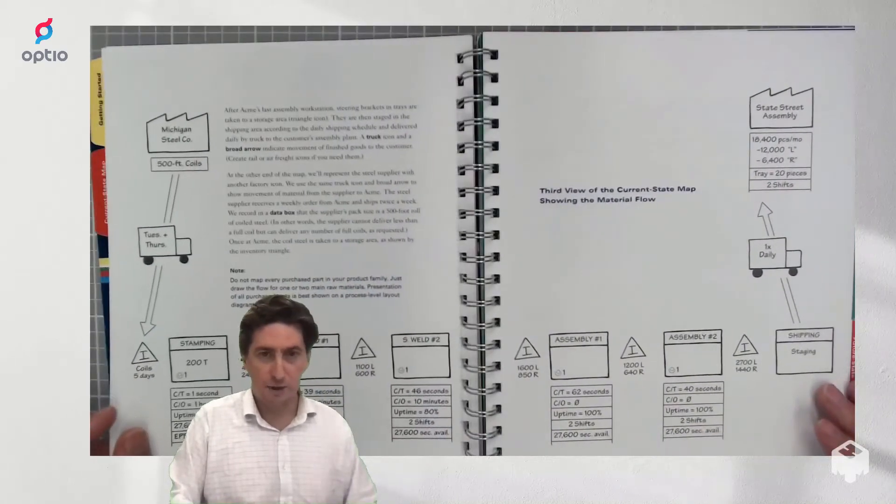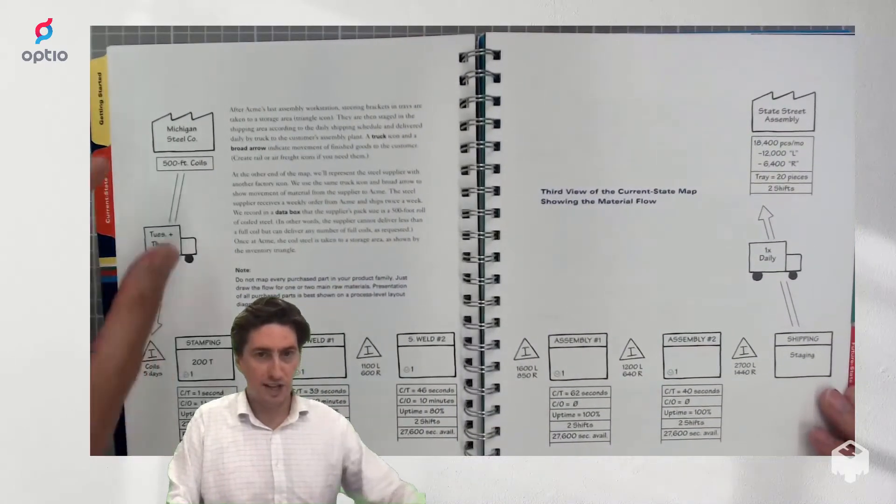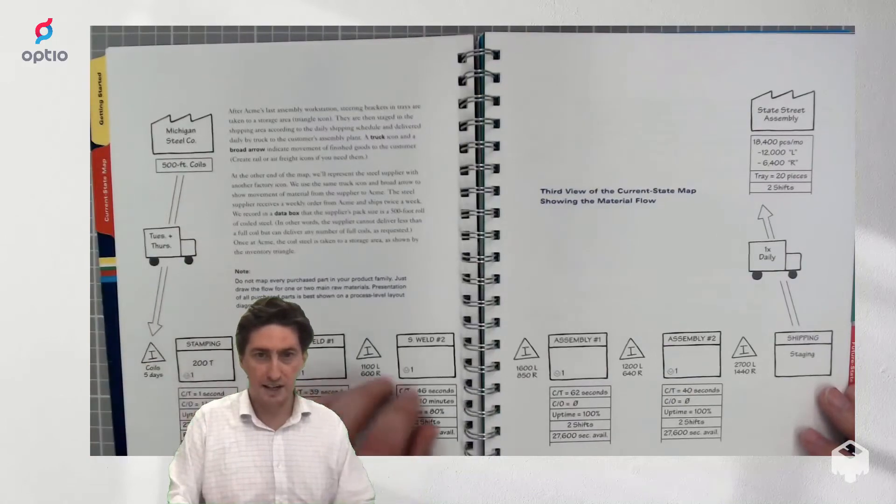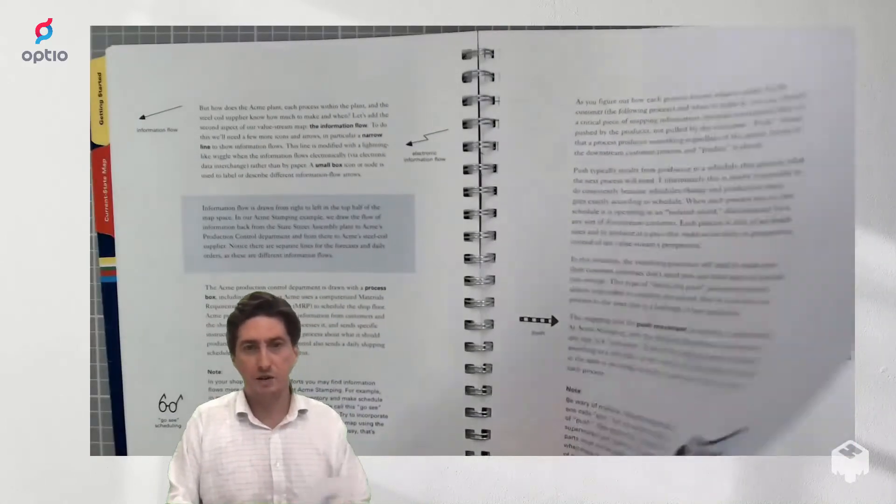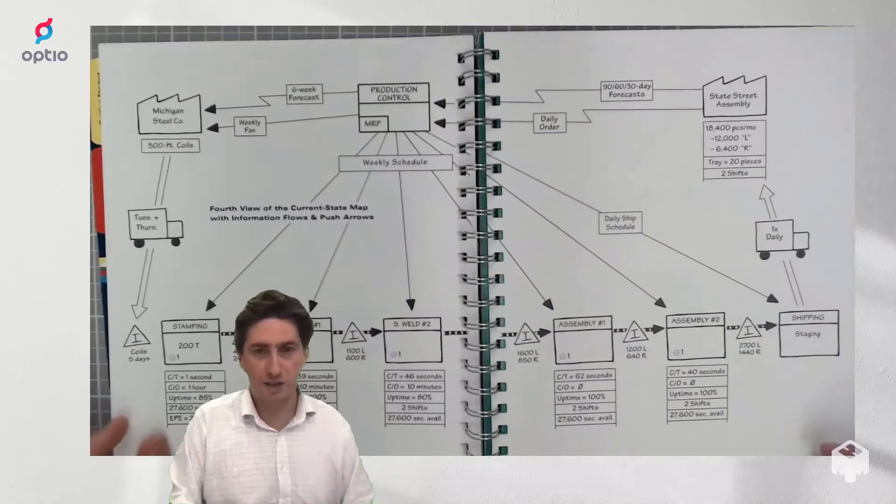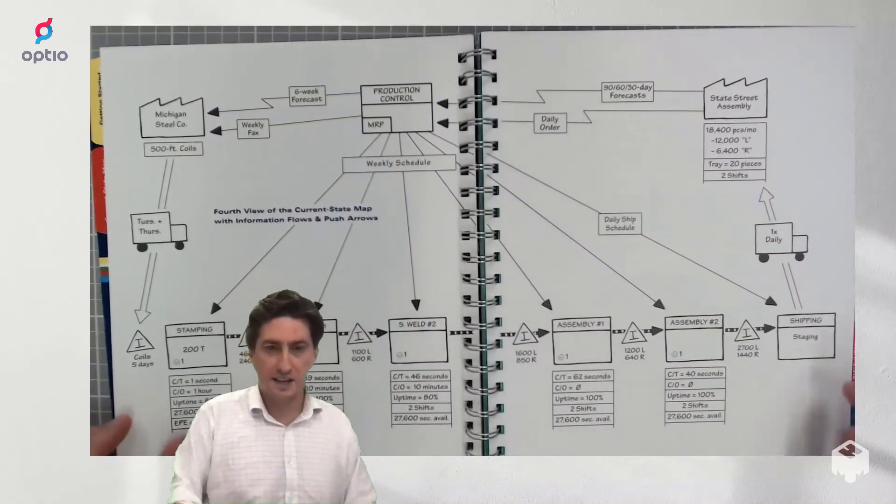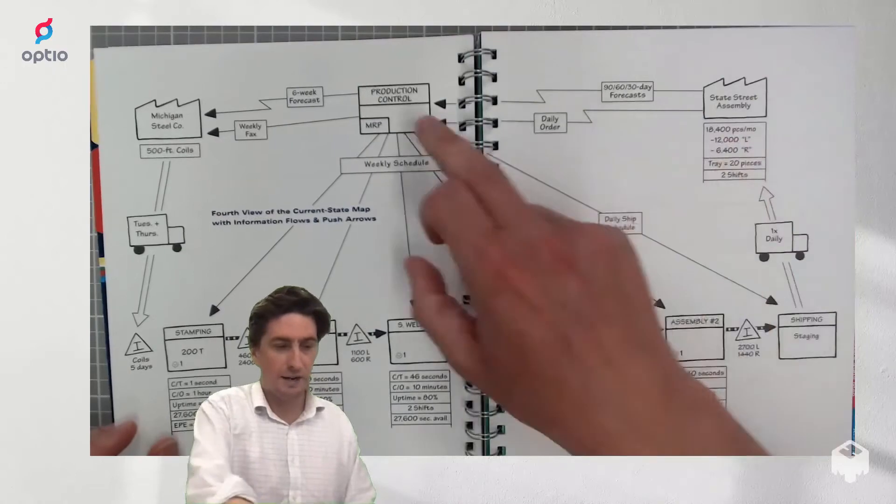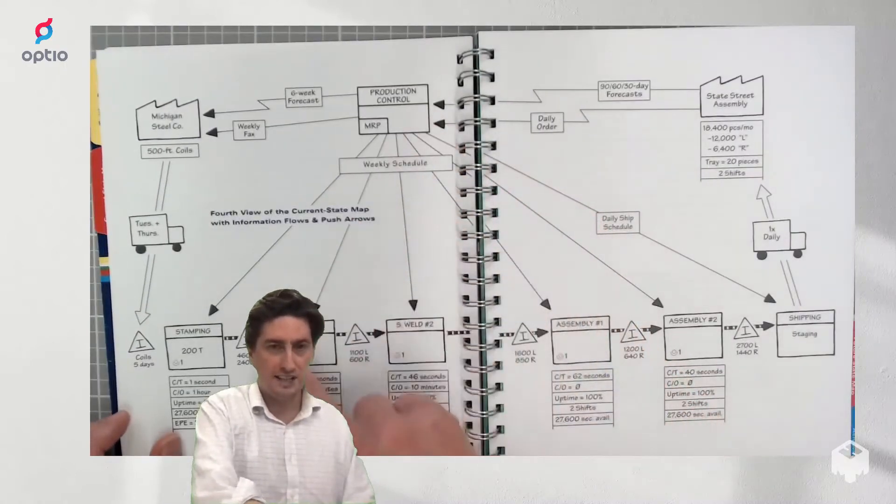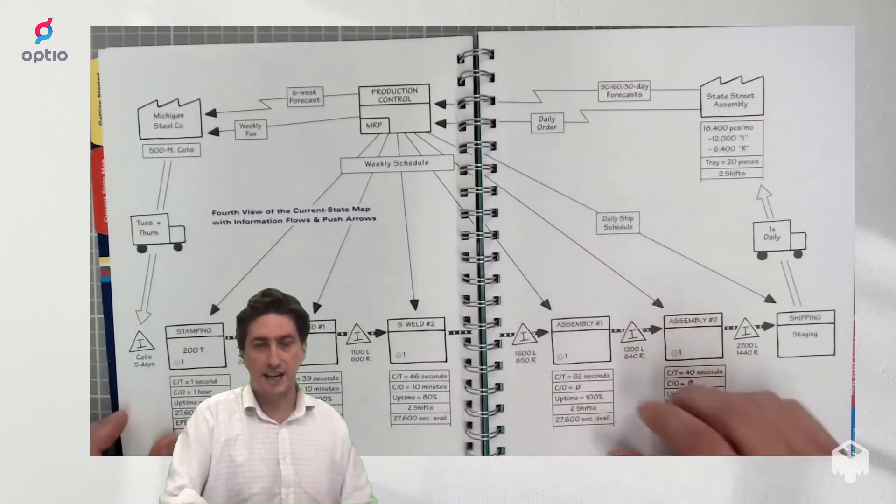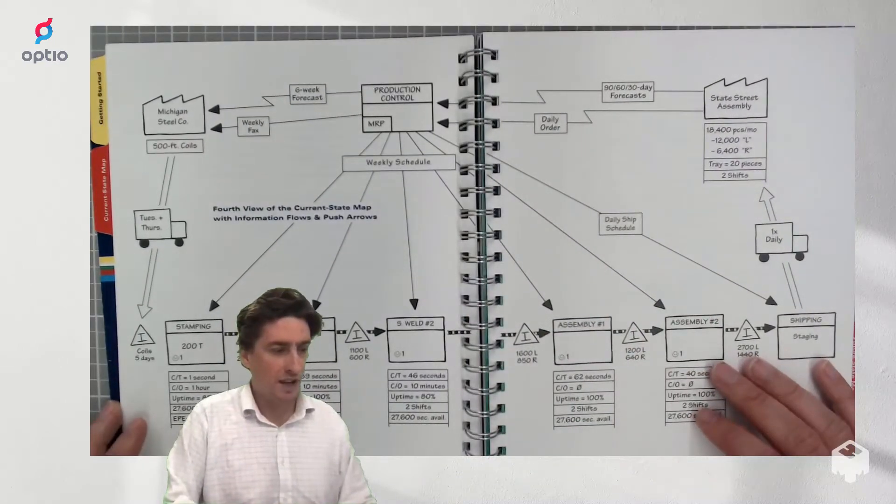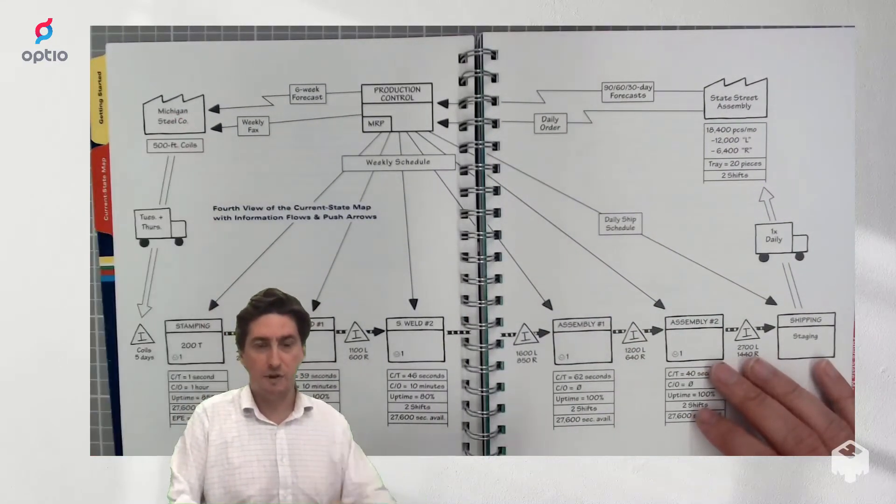So now that you have modeled your material flow which starts with your suppliers and then goes to your process to your customers, the book also explains how to map your information flow. In this case the customer requests come in at a production control which sends daily orders to each of your stations and tells your workers what they need to do as well as orders from your supplier.